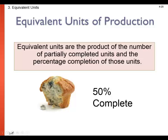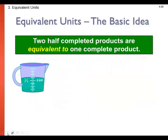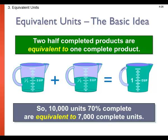Here we are introduced to equivalent units of production. Equivalent units are the product of the number of partially completed units and the percentage completion of those units — just a multiplication. For example, one muffin at 50% completion equals half a muffin equivalent unit. If we have multiple incomplete units, we can theoretically combine all of those incomplete units into full units. If 10,000 units are 70% complete, that is equivalent to 7,000 complete units. We need a way to divide our costs by units even though they may not be fully complete.